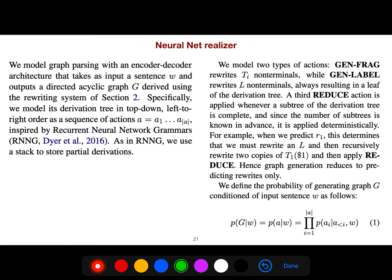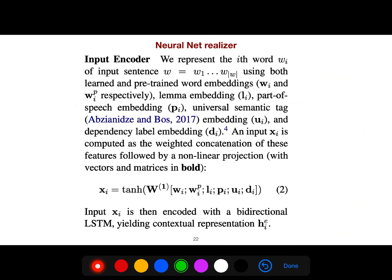We model that with neural net realizer, a model that has two types of action: gen fragment and gen label. We also have a reduce action, just like shift-reduce paradigm. A third reduce action is applied whenever a subtree is completed. For example, shift and then reduce. These actions are independent. We multiply them, just like what you do in shift-reduce or any other method.